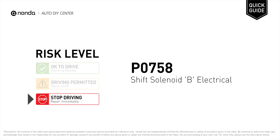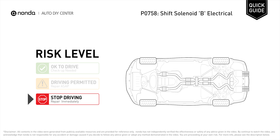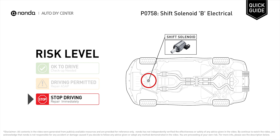P0758 is a diagnostic trouble code for shift solenoid B electrical. Under this circumstance, stop driving and repair your vehicle immediately. It indicates that the PCM has detected an electrical abnormality in transmission shift solenoid B.